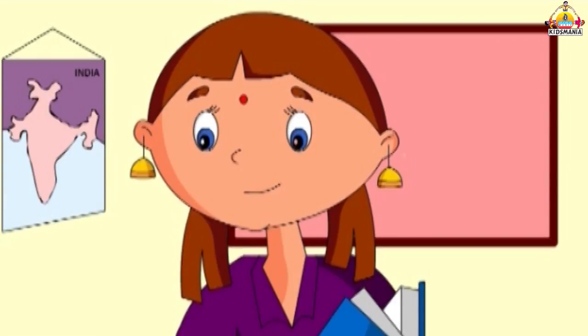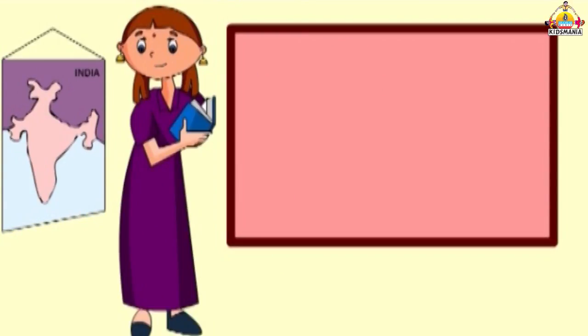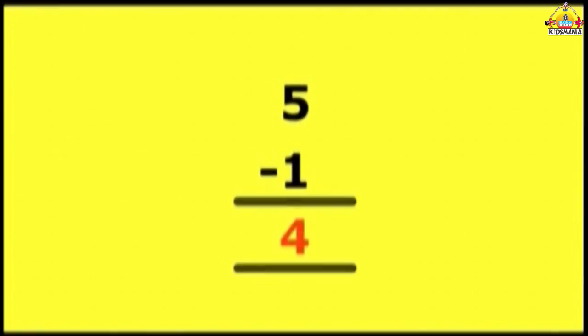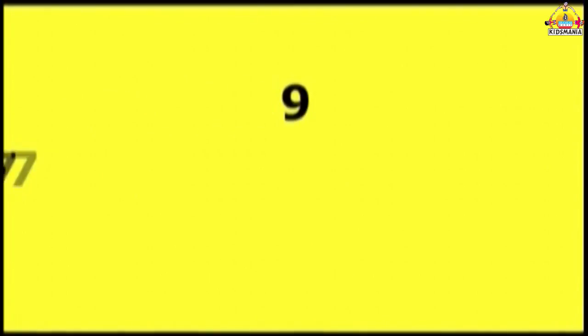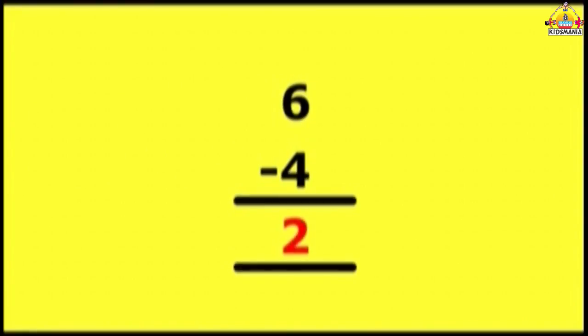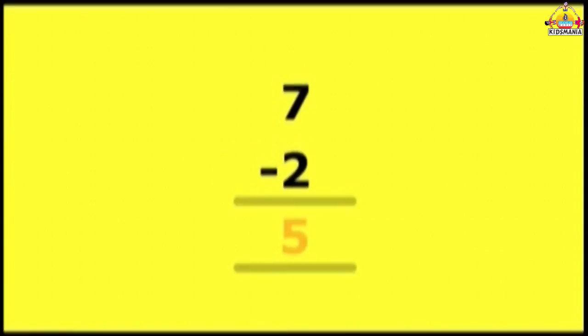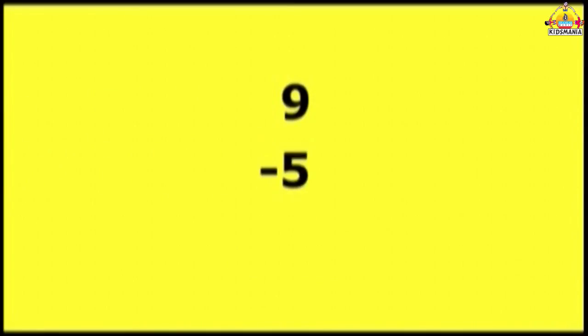Now, column method. Let's learn the subtraction by column method. Look at it. 3 minus 1: 2. 6 minus 3: 3. 5 minus 1: 4. 8 minus 4: 4. 7 minus 4: 3. 4 minus 3: 1. 9 minus 7: 2. 6 minus 4: 2. 7 minus 2: 5. 9 minus 5: 4.